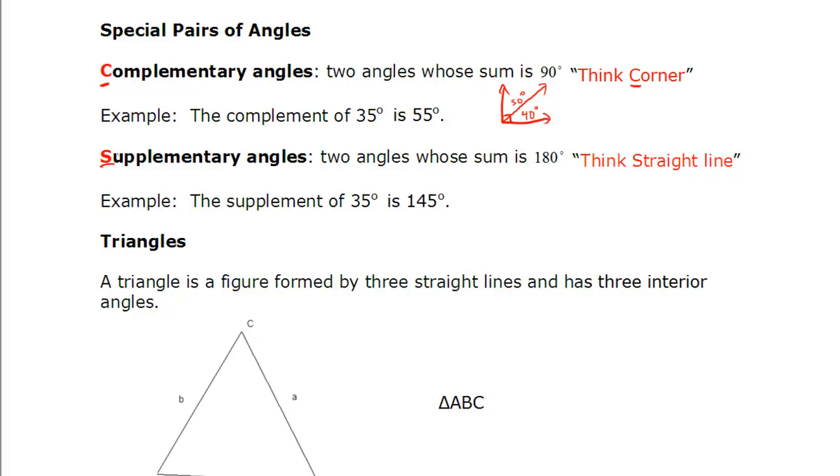Similarly, we have supplementary, and here we can think straight, and those are angles that add up to 180. So, if we have a line, any two angles here, for example, 40 and 140, add up to 180. Those are called supplementary, or 35 and 145. So those are also supplementary. Any two angles whose sum is 180.